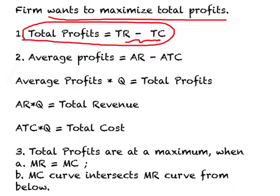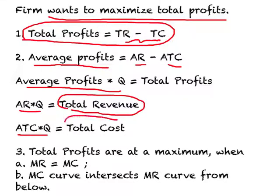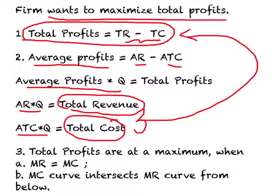Another way to find the profit-maximizing output is through average concepts. Average profits is the difference between average revenue and average total cost. Once we know average profits and how much output is produced, total profits equal average profits times quantity sold. Similarly, total revenue equals average revenue times quantity sold, and total cost equals average total cost times quantity sold. The difference between these two gives us total profits.